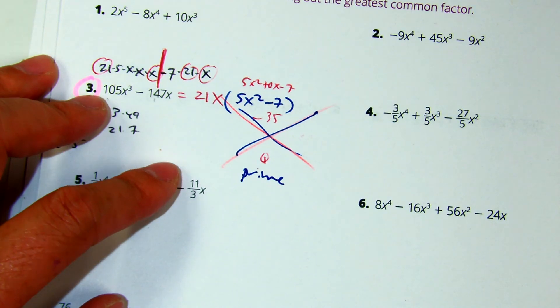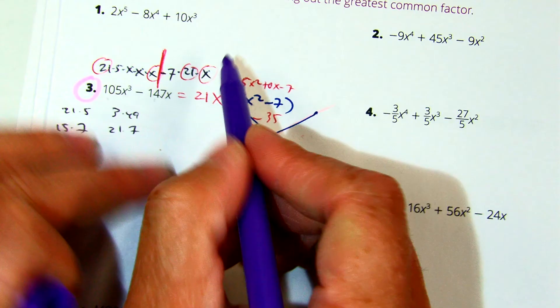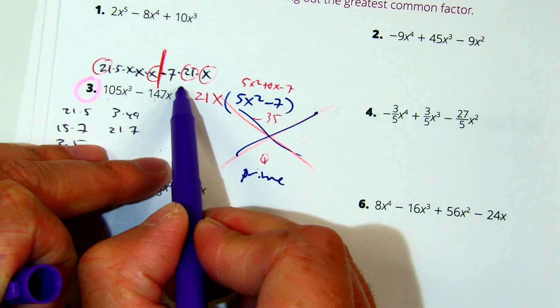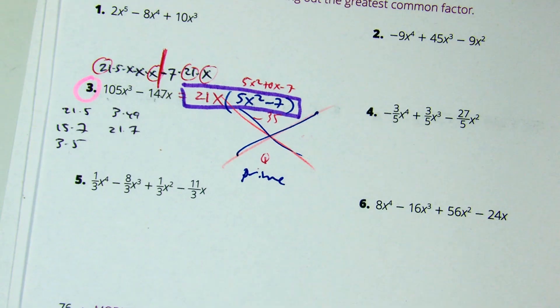Now, don't make the mistake of writing prime as your answer. Because it's telling you to factor it. And this is my answer. 21x times 5x squared minus 7 is our answer.